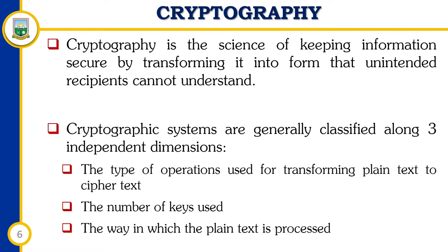One important aspect of the encryption process is that it almost always involves both an algorithm and a key. A key is another piece of information — almost always a number, though it could be digits or alphabetic characters — that specifies how the algorithm is applied to the plaintext in order to encrypt it. Even if the encryption method is strong, it is difficult or impossible to decrypt without a key.